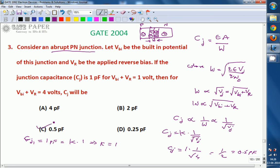So 0.5 picofarad is the answer. The depletion capacitance reduces as reverse voltage increases and the junction capacitance becomes half. So the right option for this is C.